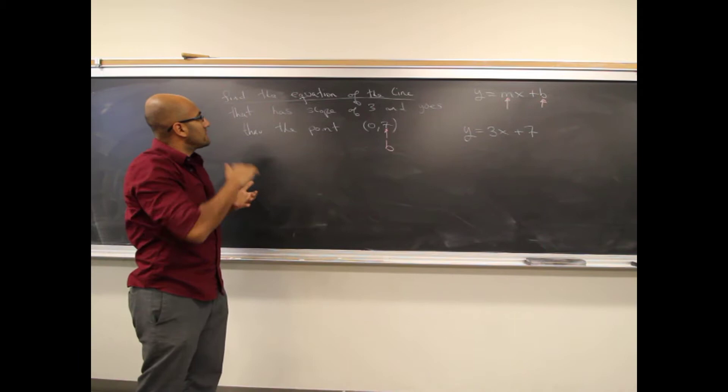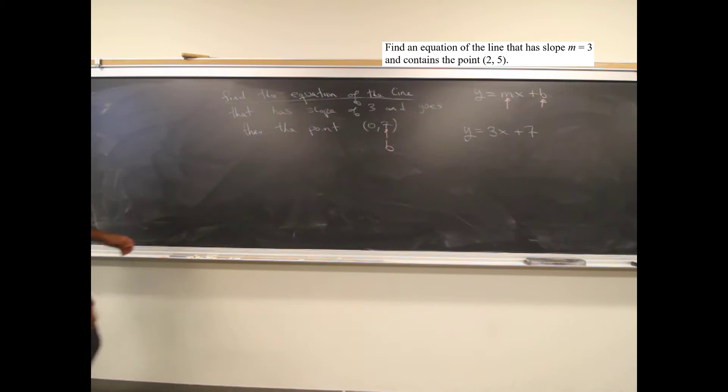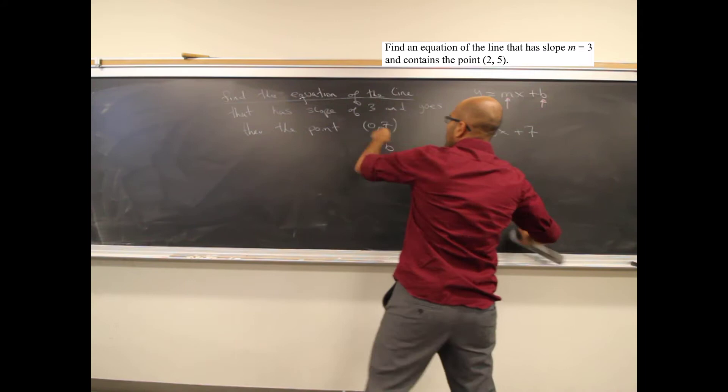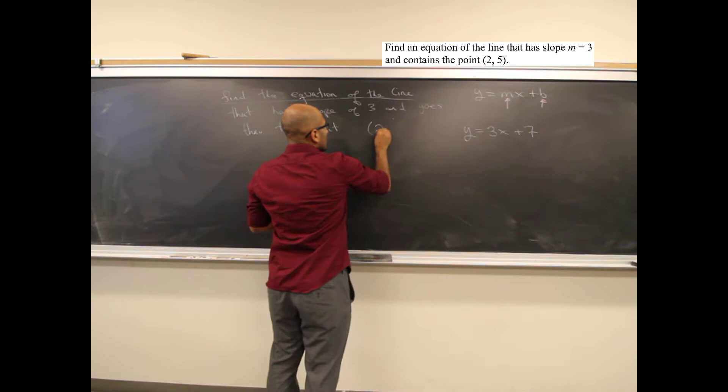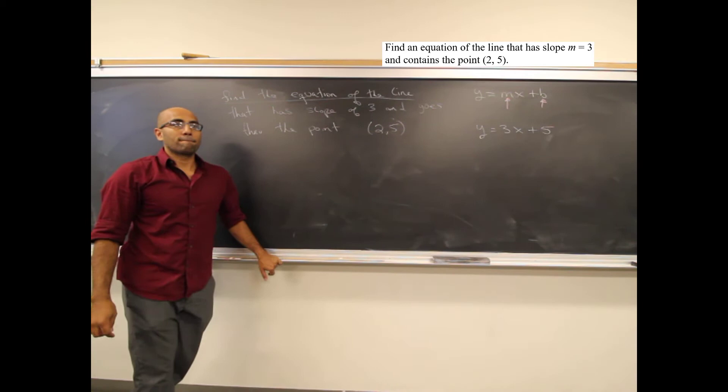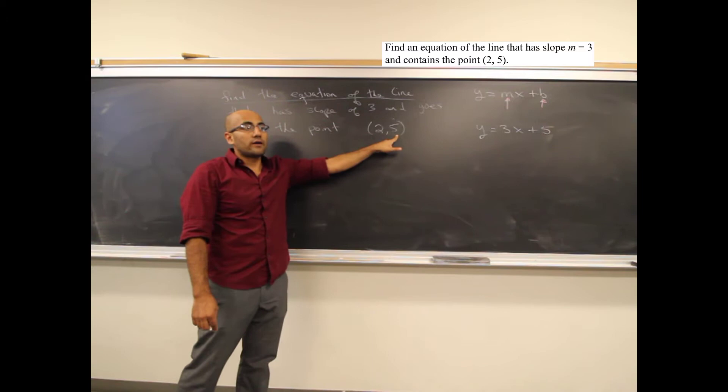Another example: find the equation of the line that has slope m equals 3 and contains the point (2, 5). The first kind of mistake people make is thinking the answer is y equals 3x plus 5. But (2, 5) is not the y-intercept — it's just some random point. This is not B.